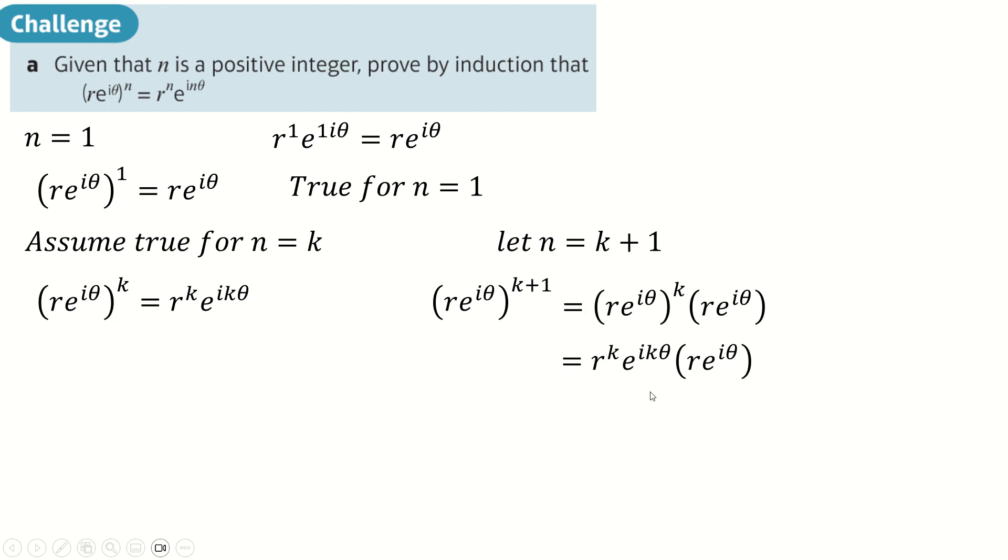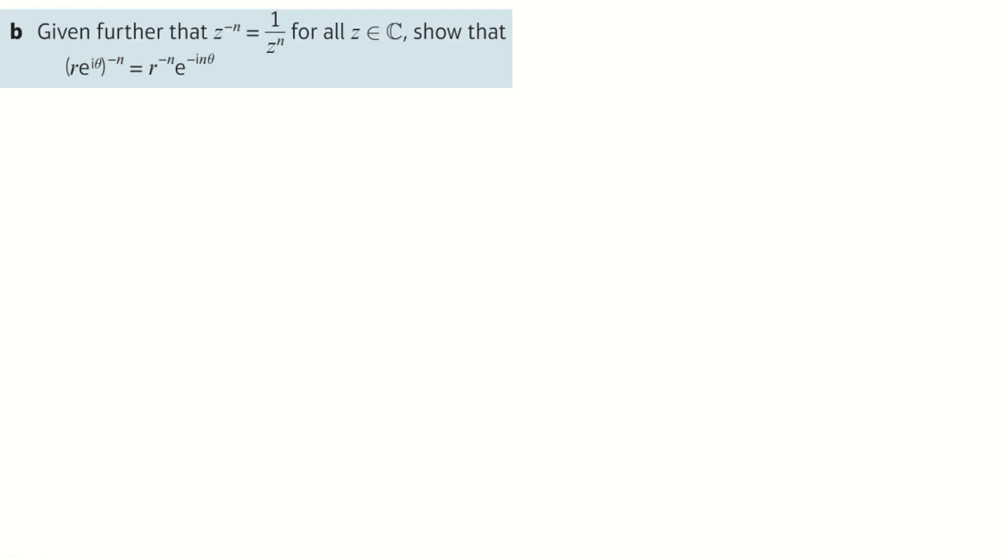And now this is all just multiplying. So this is the same as r^k times r, which is r^(k+1). And then e^(ikθ) times e^(iθ), where you can add the little powers together. And you get this, which you can factorize out k or an iθ from to leave behind k plus one. And therefore this is this, which matches with this. The usual thing that you do at the end of an induction proof. And yeah, that's good.